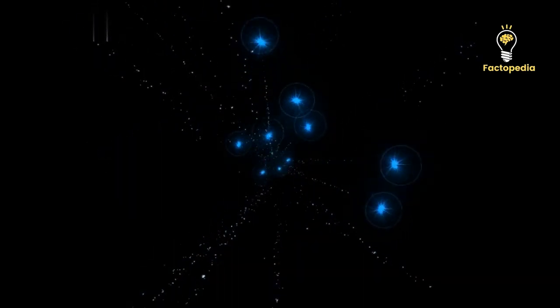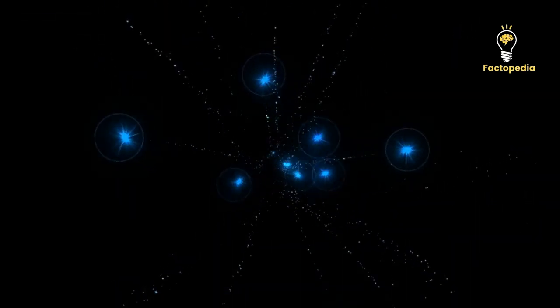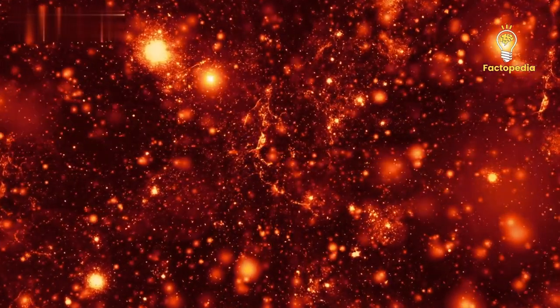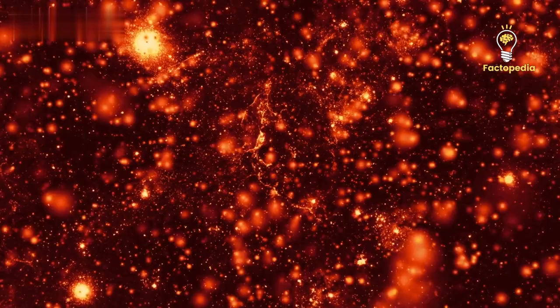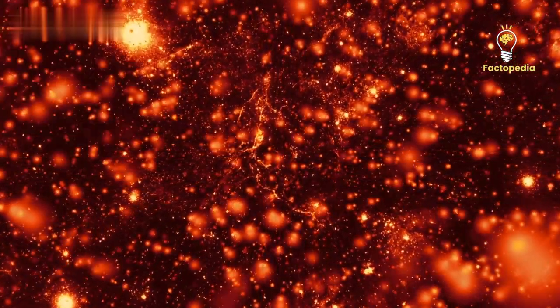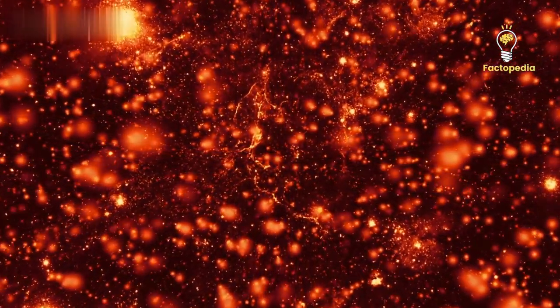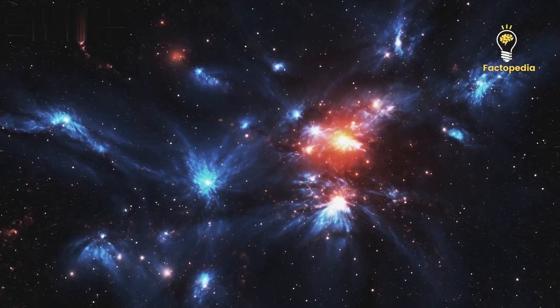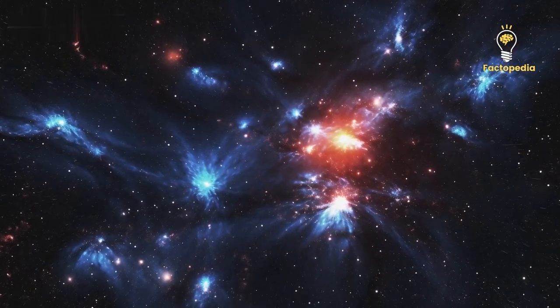The presence of a high-velocity star alone doesn't definitively identify the nature of the central mass. So, researchers conducted simulations to explore what would happen if the high-velocity star were removed. Surprisingly, the cluster still exhibited a mass excess at its core, albeit with a slightly more extended distribution.